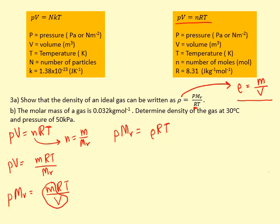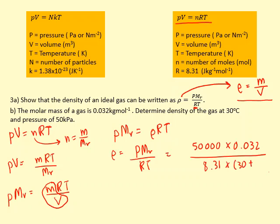The molar mass of a gas is 0.032 kilograms per mole. Determine the density of the gas at 30 degrees Celsius and pressure of 50 kilopascals. I'm just going to put the numbers into this equation: 50 kilopascals times molar mass 0.032 kilograms per mole, gas constant, and temperature in Kelvin. That gives me 0.64 kilograms per meters cubed.